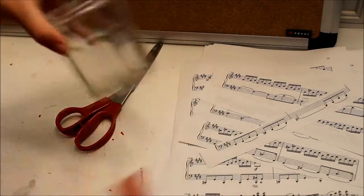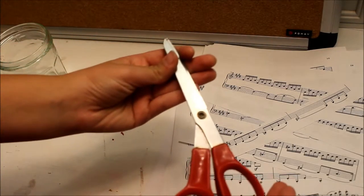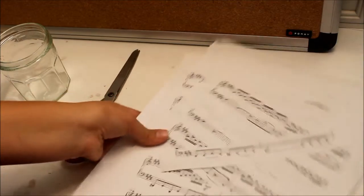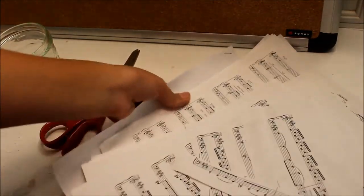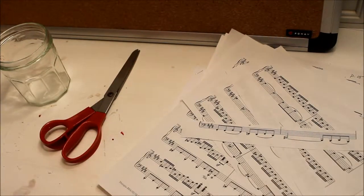The first thing you'll need is a jar, and then scissors because we're going to be cutting up some old sheet music that I have into little strips. I am a musician, so I have a ton around. You also need ribbon just to decorate the top of the jar.